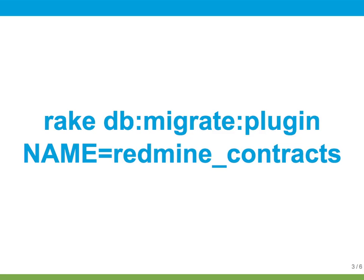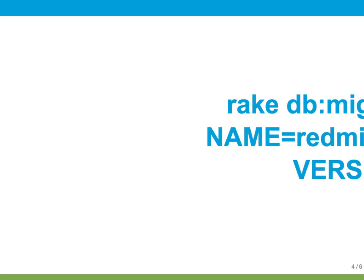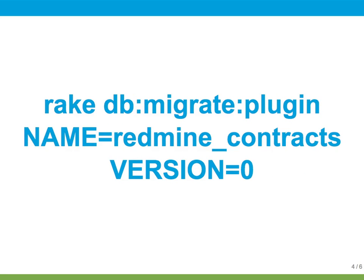In this case, it's the Redmine Contracts plugin. But this still won't uninstall a plugin — it's only going to upgrade its database. In other words, it's going to migrate the plugin to the latest version. To remove a plugin, we need to add a version 0 to the command. This basically says: change Redmine Contracts database version to 0. This will run all the database migrations in reverse until all of them are reset.